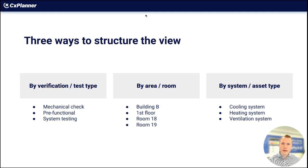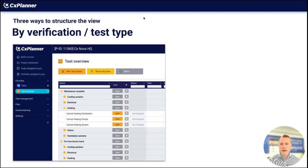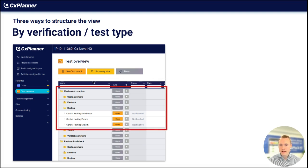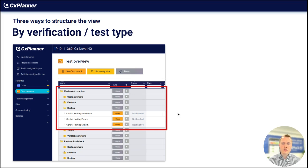In the next slides, we'll dive into each individual structure view. The first one is by verification test type. You can see a screenshot from CX Planner here from the test overview, where I have divided the assets into main verification areas. The red circle highlights mechanical complete at the top, with systems beneath it. I have expanded on mechanical complete and the heating system, where we have the central heating distribution, pumps, and systems. This is a good way to structure across the main test areas and then the systems or equipment beneath that.